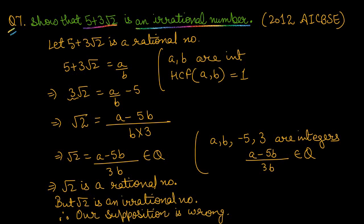Since √2 is irrational, our supposition is wrong. Therefore, 5 + 3√2 is an irrational number, not a rational number. Thank you.